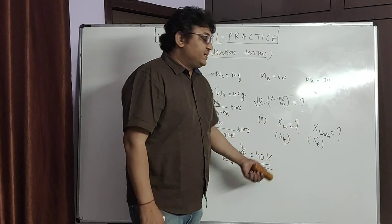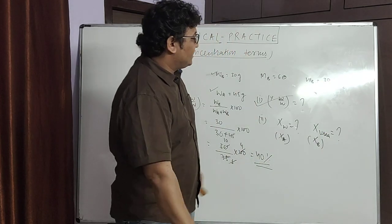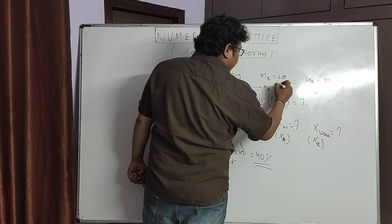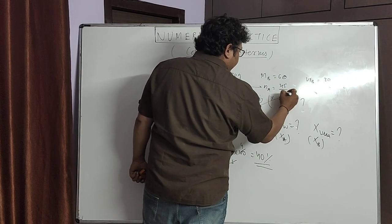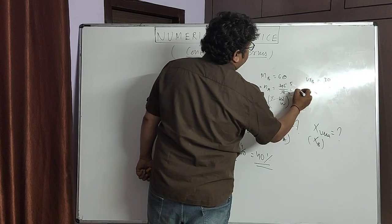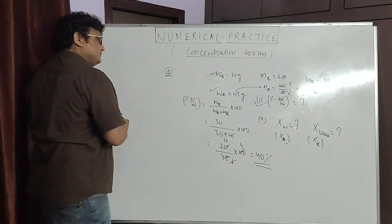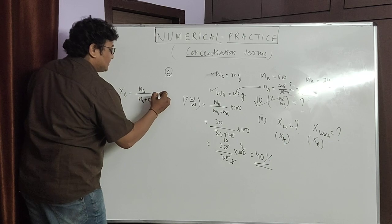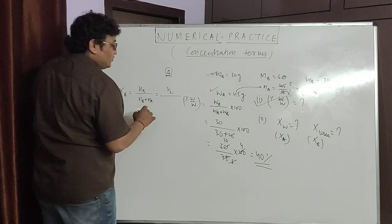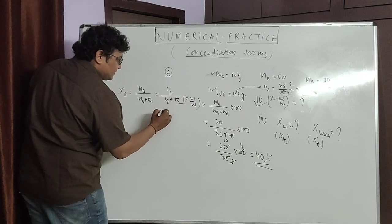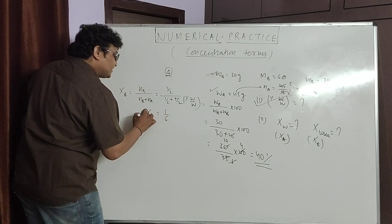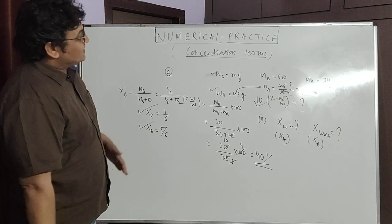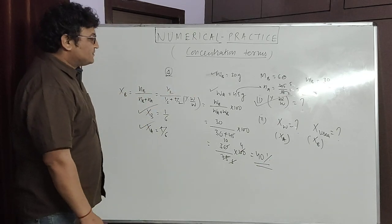Now the mole fraction of solute and solvent. Mole fraction of solute = moles of solute divided by (moles of solute + moles of solvent). Moles of urea = 0.5, moles of water = 45/18 = 2.5. So mole fraction of urea = 0.5/(0.5 + 2.5) = 1/6. Mole fraction of water is automatically 5/6.